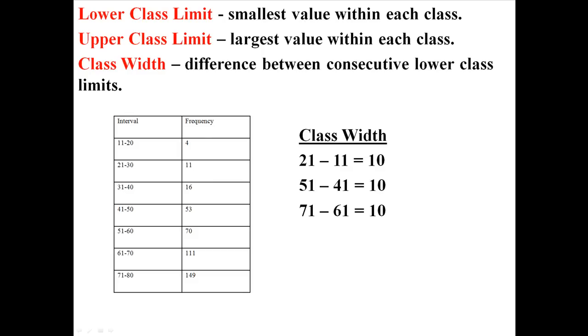You can see that for the first one, the lower class limit is 11. The upper class limit is 20. Then the next one, the lower class limit is 21, the upper class limit is 30. And our class widths are always 10, because whenever you're subtracting consecutive lower class limits, you end up with 10 as shown there.